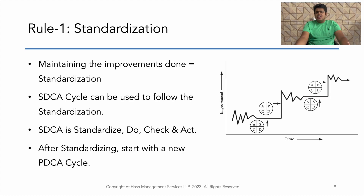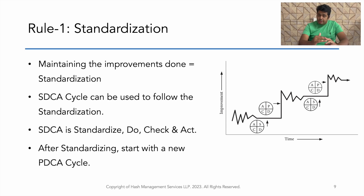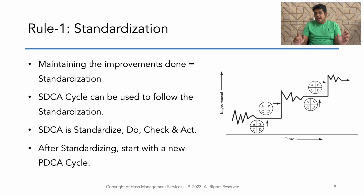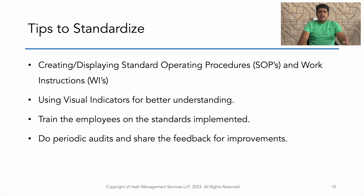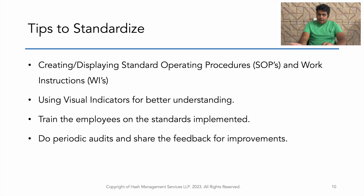Rule 1: Standardization. What is standardization? Maintaining an improvement is called standardization. Once an improvement is being implemented, we have to standardize it. We can use the SDCA cycle to implement this standardization. What is SDCA? It is similar to the PDCA cycle — SDCA refers to Standardize, Do, Check and Act. PDCA and SDCA go hand in hand when implementing Kaizens. Some tips for standardization: create or display SOPs and work instructions on your shop floor; use visual indicators for better understanding; train employees on the standards being implemented; and do periodic audits and share feedback with the shop floor team.